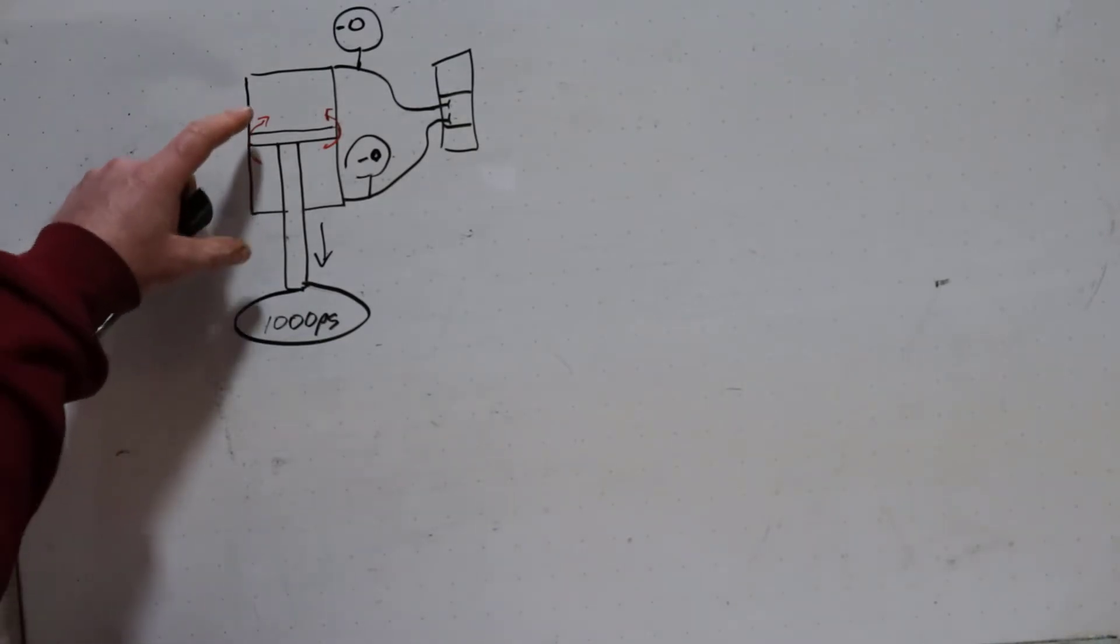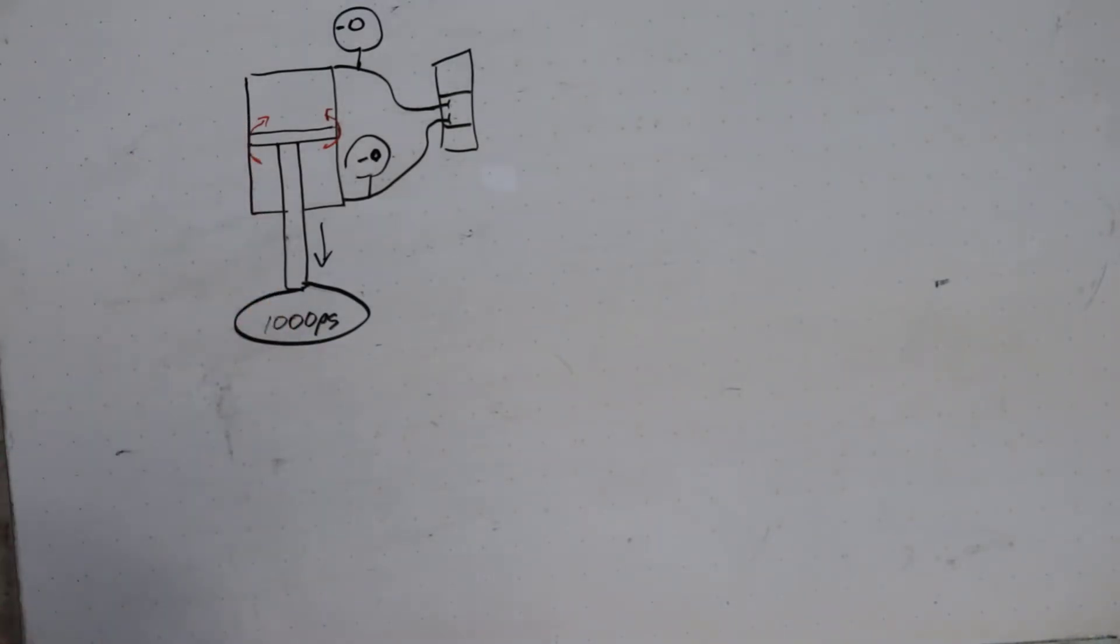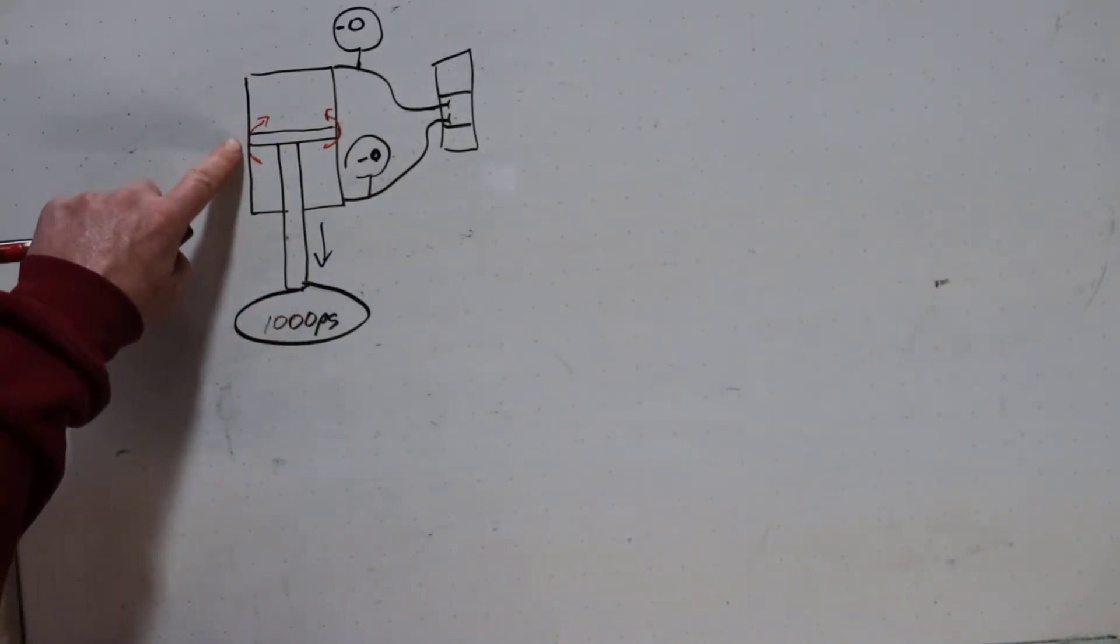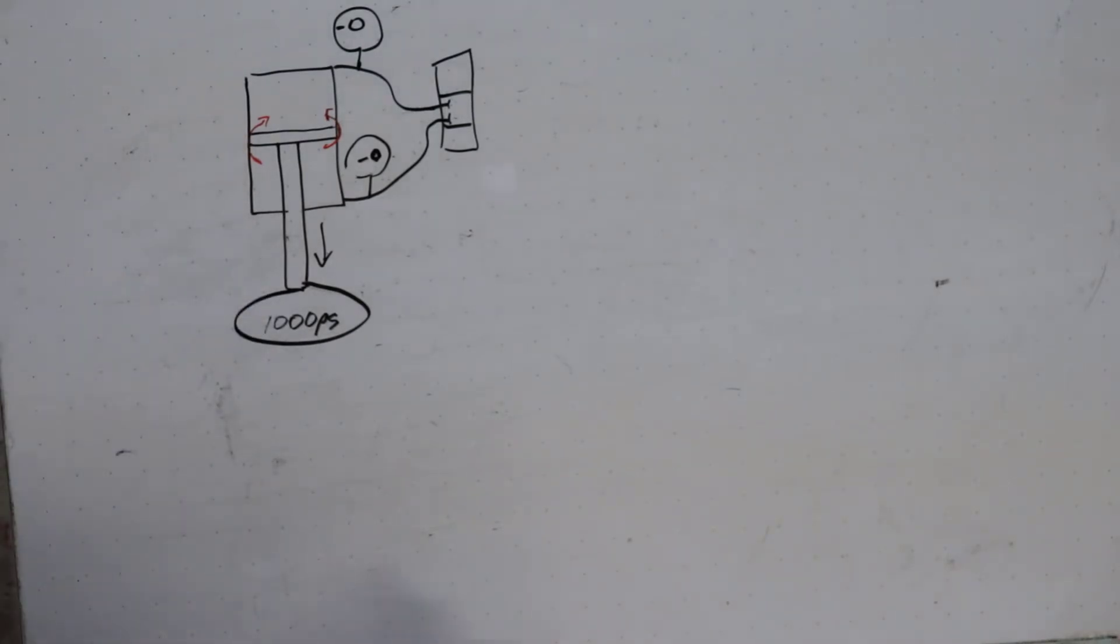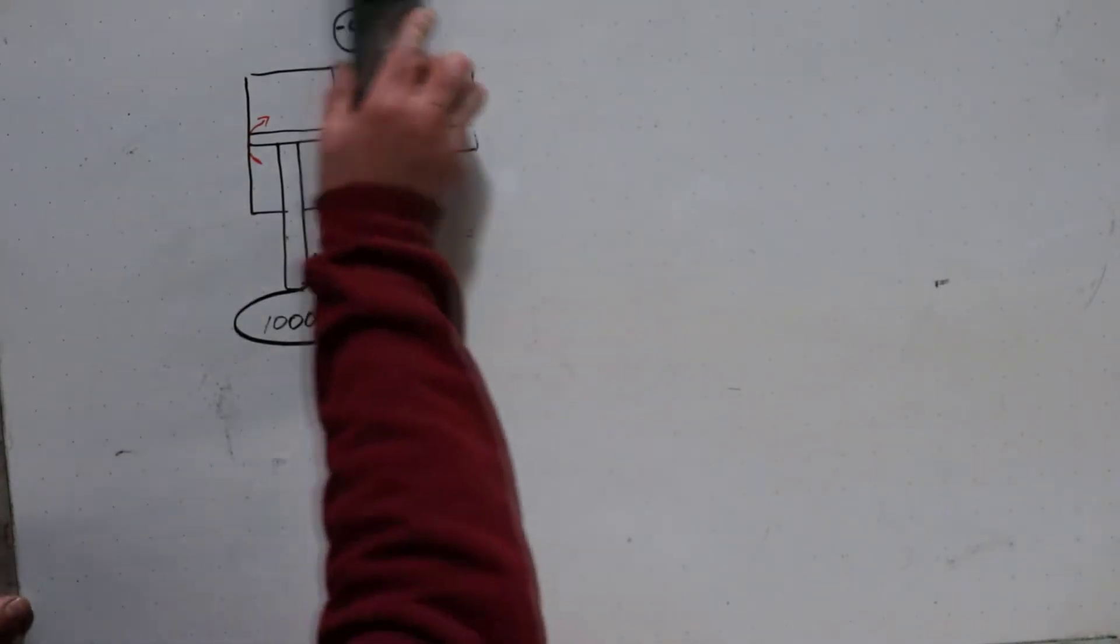So anytime that a load is trying to extend the differential cylinder and the seals fail, it will drift. So now let's look at the opposite.